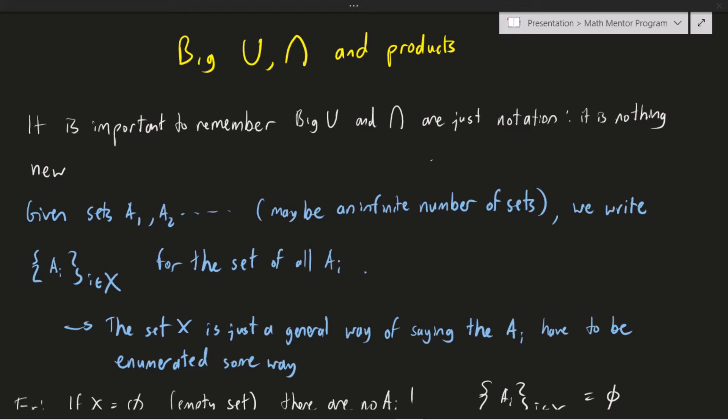In this video, we'll wrap up our discussion of set operations by talking about the big union, intersection, and product notation for sets. Throughout this discussion, you're going to have to remember that the big union, intersection, and product are really just pieces of notation. They are nothing new, they are just generalizations of things that we already know about set theory, namely the union and the intersection.